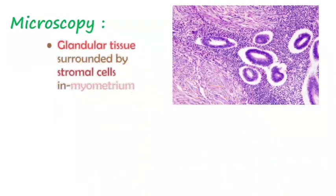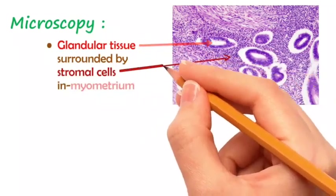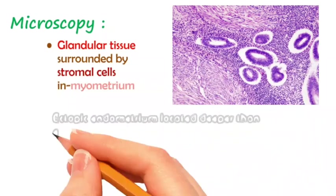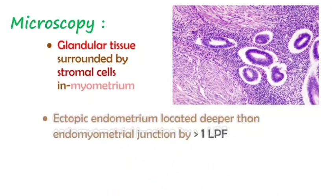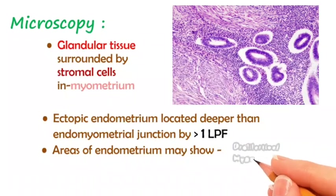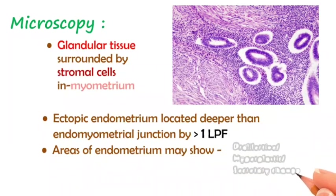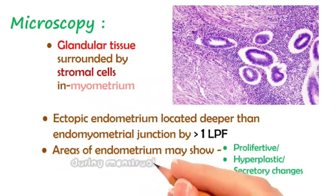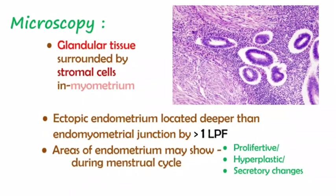Microscopically, there is the presence of glandular tissue surrounded by stromal cells in the myometrium. Ectopic endometrium is located deeper than the endometrial junction by more than one low power field, and areas of endometrium may show proliferative, hyperplastic, and secretory changes during the menstrual cycle.